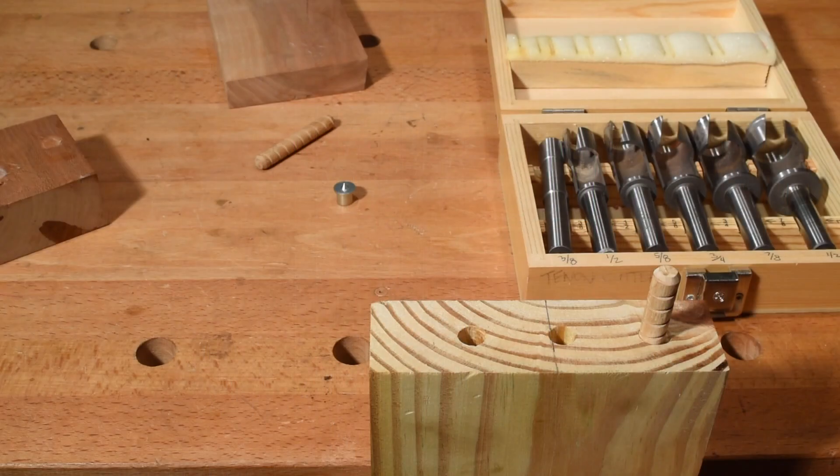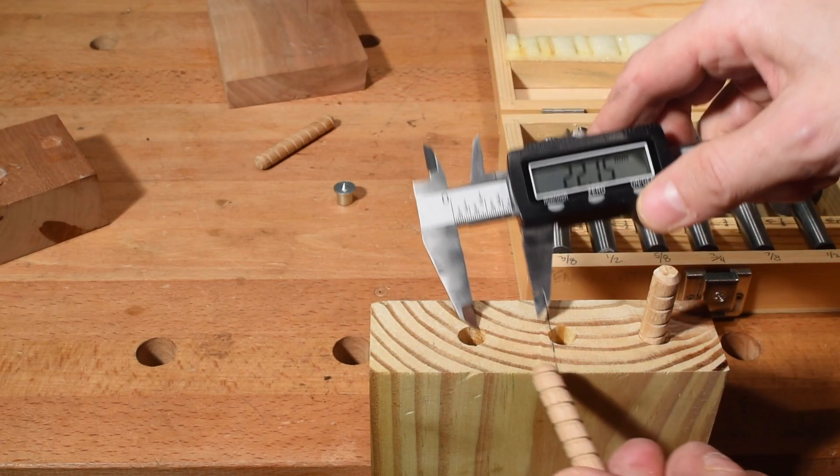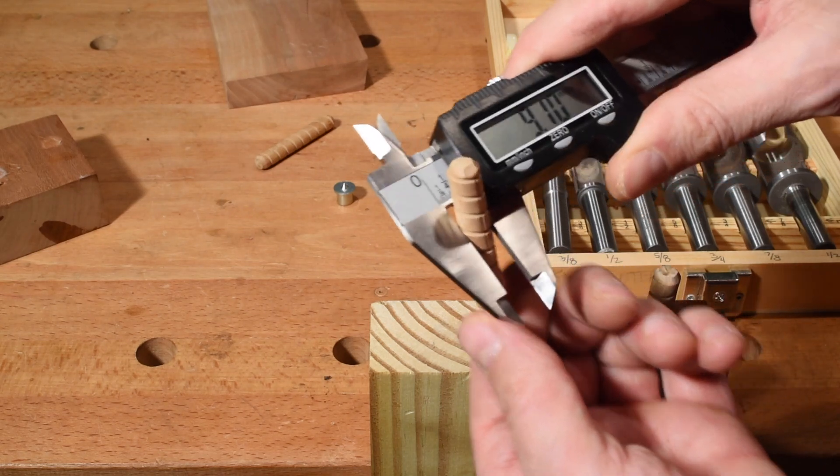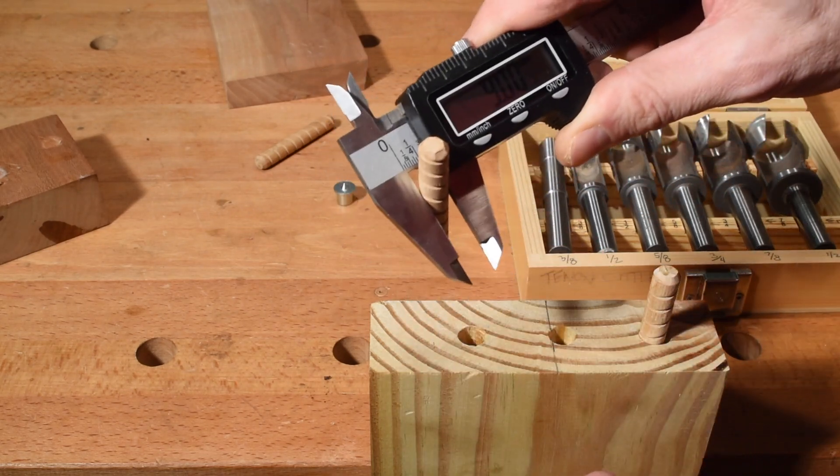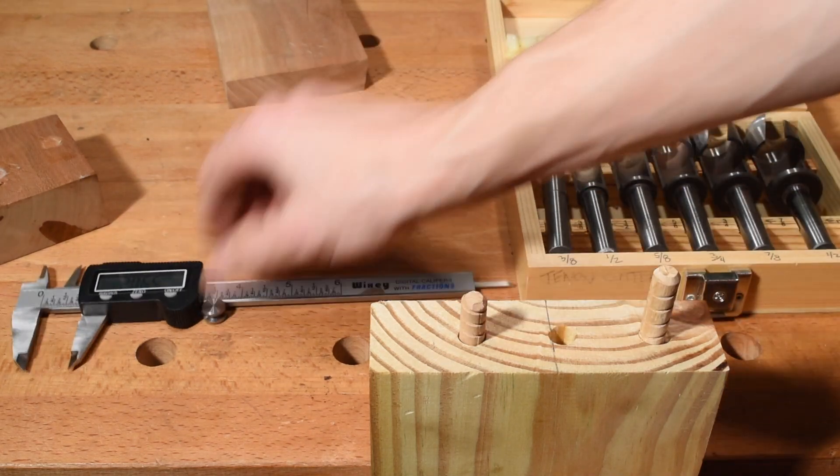Hi guys! Today I'm gonna show you how to make dowel centers. In my case I'm gonna be making the 3 eighths which is about 9.5 millimeters. Those type of dowels.